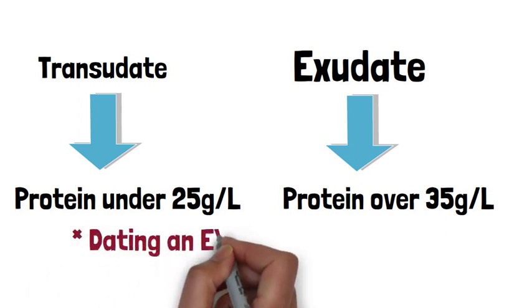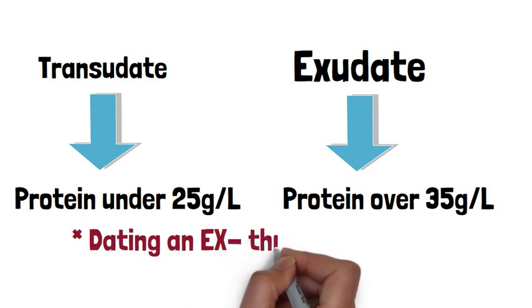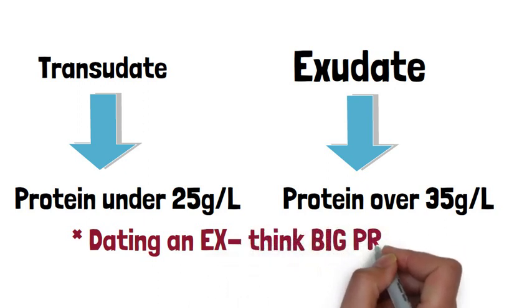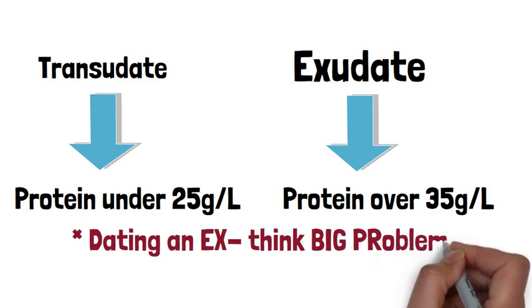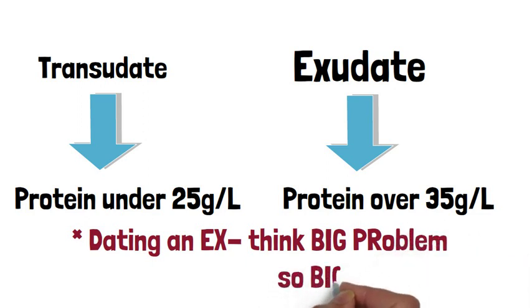And in medicine, of course, there's a lot of things to remember. So a way you can differentiate these two is thinking of exudate as basically like an exudate. So if you're going out with an ex, generally it's a big problem. And problem begins with PR, and so does protein. So remember, dating an ex is a big problem. So an exudate pleural effusion will give you a big or large amount of protein.